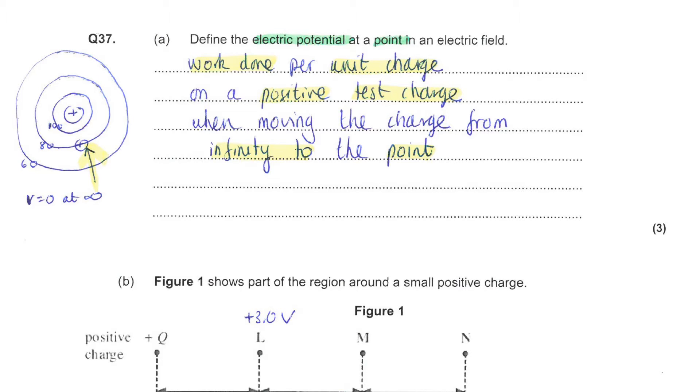This is the electric fields homework, question 37. You are asked to define, first of all, the electric potential at a point in an electric field.